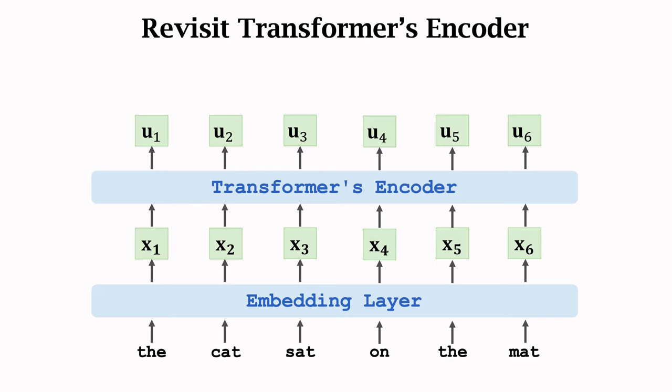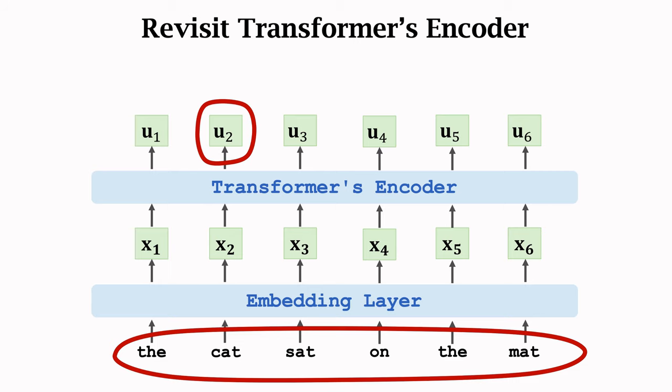Note that an output vector ui is not only a function of the ith word, but also all the input words. For example, u2 depends on the entire input sentence, rather than depending on only the second word. A change of any one of the 6 words will make vector u2 different.